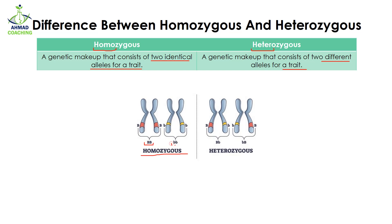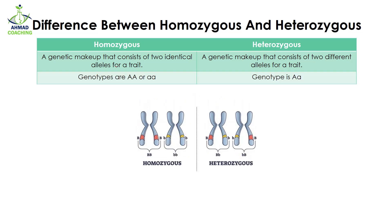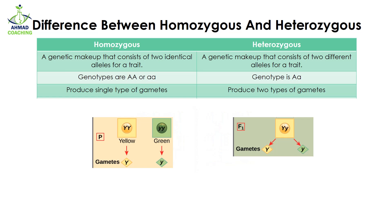Here we can see that in homozygous, both alleles for a particular trait are the same, but in case of heterozygous, both alleles are different — one is capital and the other is small. The genotype of homozygous will be AA (capital A capital A) or aa (small a small a), while the genotype for heterozygous will be Aa, meaning one allele is capital while the other is small.